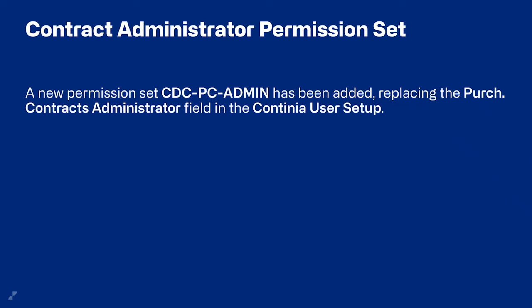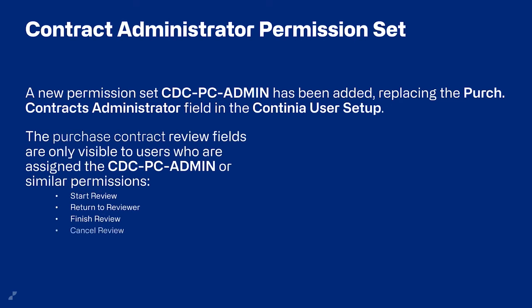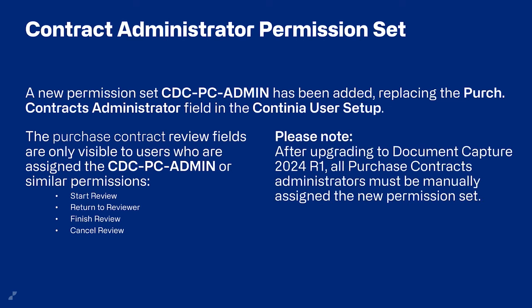With the release of DomoCapture 24, we've added a permission set called 'CDC PC Admin,' which replaces the purchase contract administrator field in the Continuous user setup. Users assigned this permission set can perform the review process actions — start review, returned review, finished review, or cancelled review. When you upgrade to the latest version, you need to go in and adjust users to have this permission set instead of the old administrator checkmark, which has been removed. This is important for those using purchase contracts.